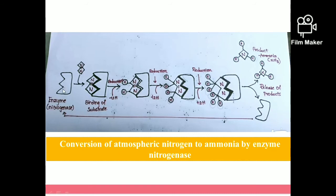The enzyme nitrogenase accepts the molecular nitrogen — which is bound by three covalent bonds — at its catalytic site. By a reduction process, the first covalent bond is removed and it reacts with hydrogen. Again by reduction, the second covalent bond is removed and hydrogen is added. Finally, the third covalent bond is also removed and hydrogen is added, releasing two molecules of ammonia from the catalytic site.